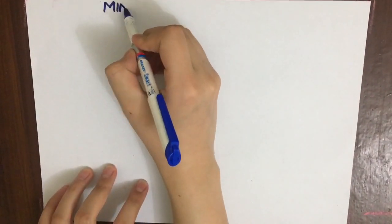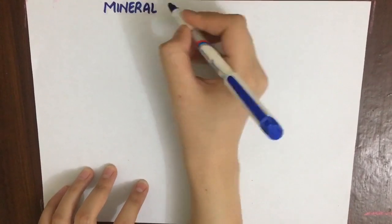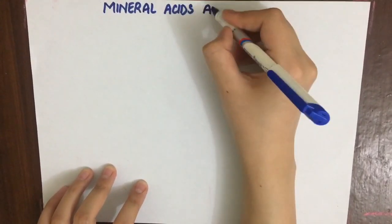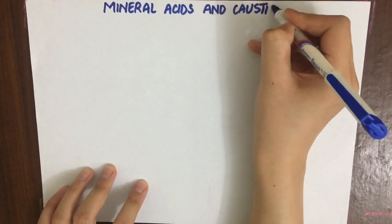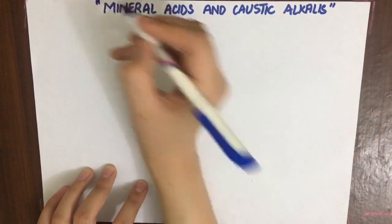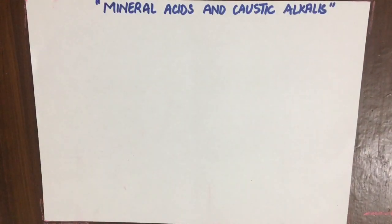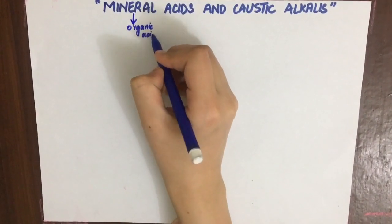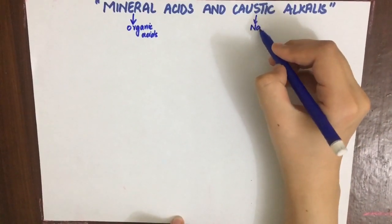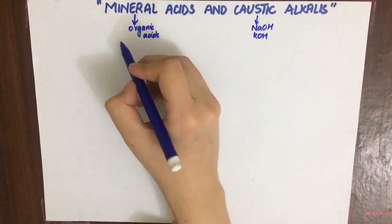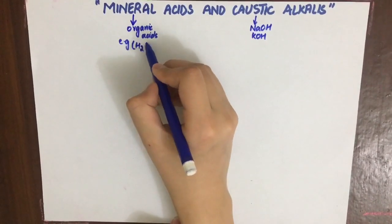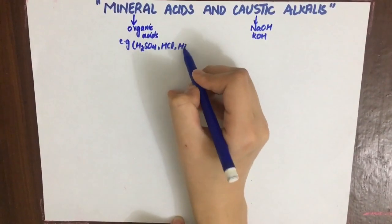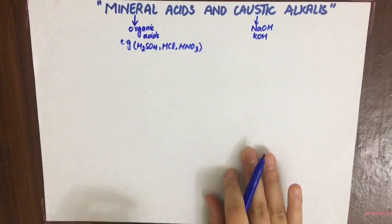In this series of clinical and forensic toxicology, the first topic is mineral acids and caustic alkalis. Mineral acids, or inorganic acids, are derived from inorganic compounds from the earth's crust — for example, H2SO4, HCl, and nitric acid. Caustic alkalis are strong corrosive alkalis, especially hydroxides of alkali metals, for example NaOH and KOH.